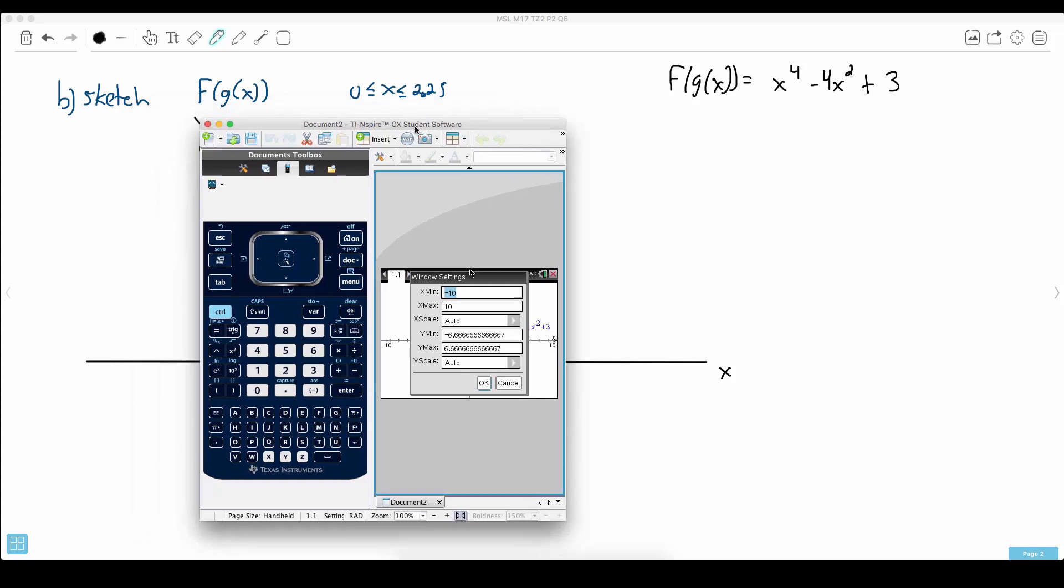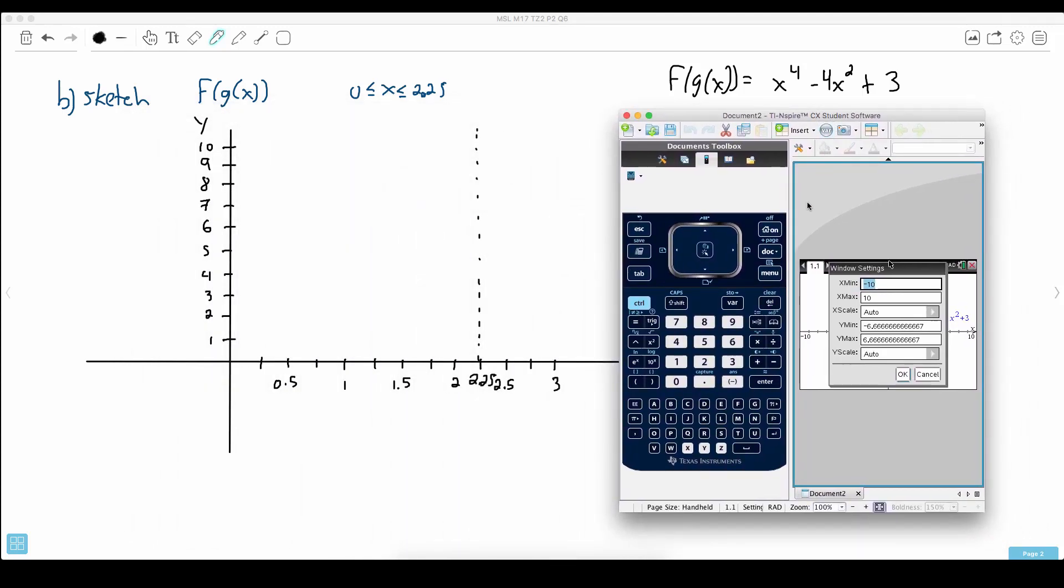So under window and zoom you can actually just do window settings here. And you can actually set it manually. I mean if they tell you to go from what to what then maybe you do the same exact thing. So x values. Maybe I'll go from like minus 1 just so I can see a little bit here. And my x max should be maybe 3 just so I can have an idea here. I like my scale.